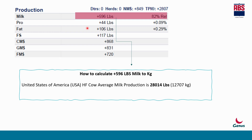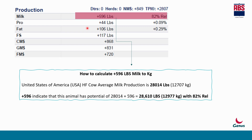In the United States, the average milk production of a Holstein cow is 28,014 pounds, that is 28,014 LBS. First, we need to convert this LBS to kilogram, which is equivalent to 12,707 kilogram for 305 days. So when a pedigree sheet says the milk potential is plus 596, that means this animal has plus 596 pounds of extra milk potential above the average.